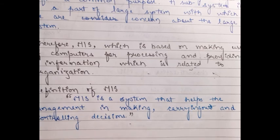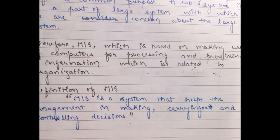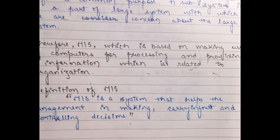In MIS, all data is fed into the information system and that data is retrieved or processed. After processing, information is generated. On the basis of that information, all organizations take their decisions. That is MIS — the management information system. I think you will have a clear-cut view about management information system.